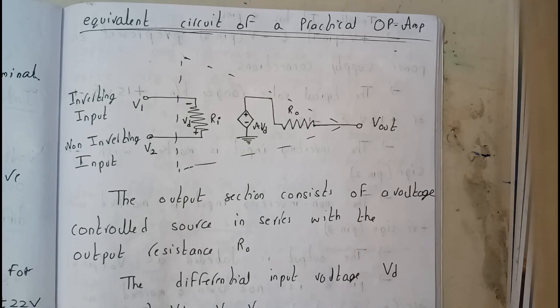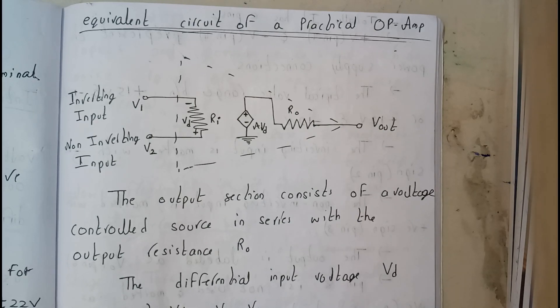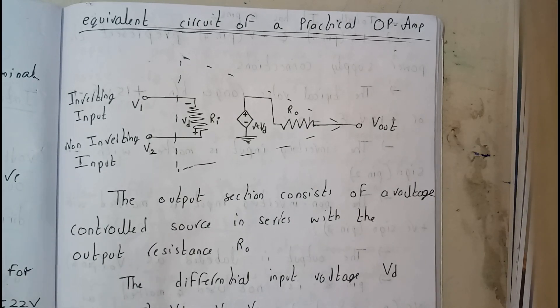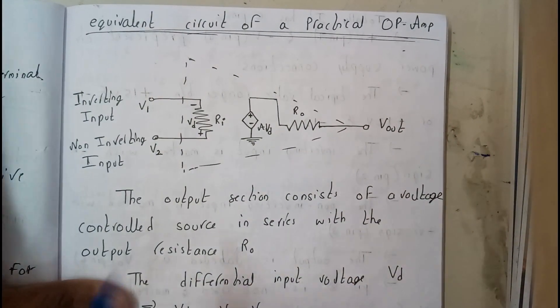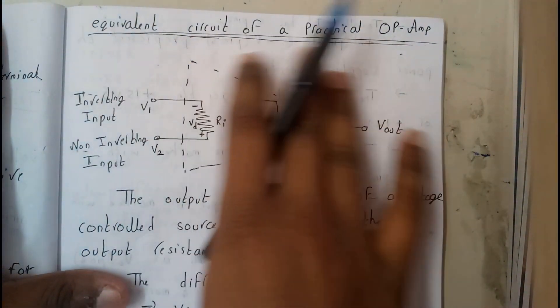So now let us go further deep into the operational amplifier, its equivalent circuit diagram and how it is created. Stay tuned to learn all about it. So basically the equivalent circuit will be something like this.